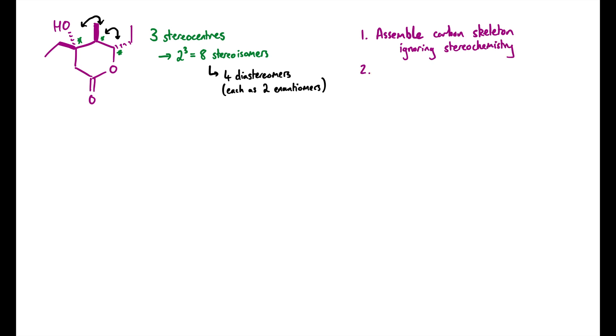The next most complex stage would be to think about how we make this diastereoselective, as in picking one of the four diastereomers. Then the third step in this process would be to think about, now that we've been able to make one of the diastereomers, can we make one enantiomer of the diastereomer selectively? So can we make our synthesis enantioselective as well?